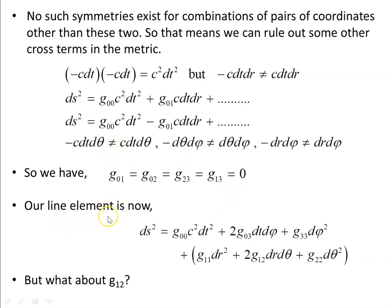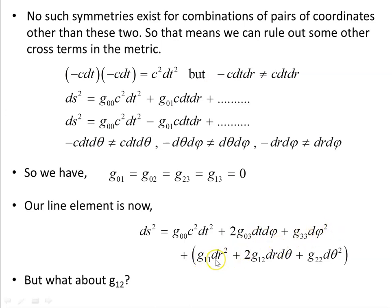The only coordinates for which reversal is allowed are t and phi — not r with phi, and not r with theta — so those cross terms must be ruled out. Our line element is now reduced to: g₀₀ c² dt² plus the cross term g₀₃ c dt dφ, plus g₃₃ dφ², plus g₁₁ dr², plus g₁₂ dr dθ, plus g₂₂ dθ².